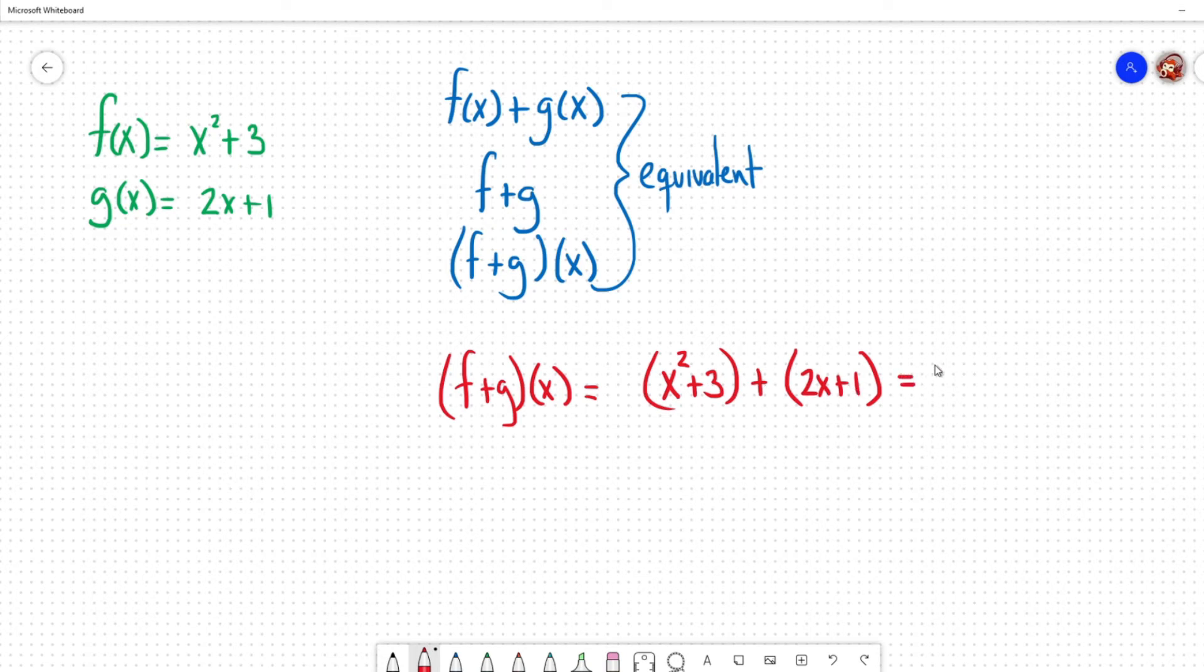So now we'll just go ahead and collect like terms. So I'm going to say equals and now we're going to add. So we have x squared plus 2x and then we have our common terms of 3 and 1 which together becomes 4. So there we go. That's it. That's f plus g of x.